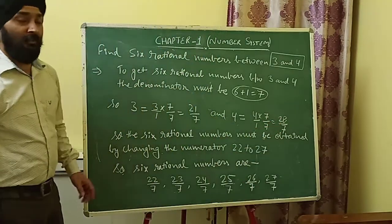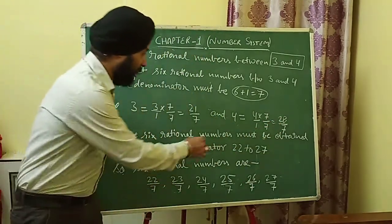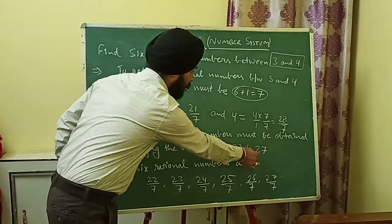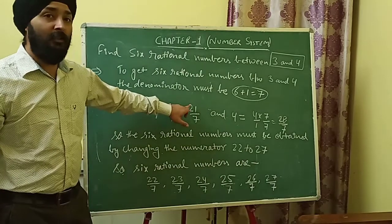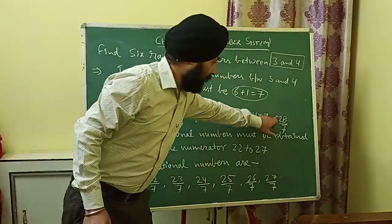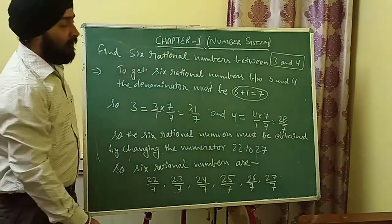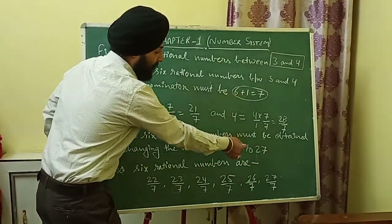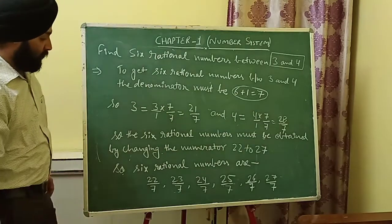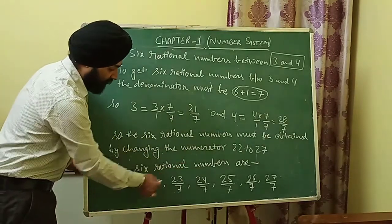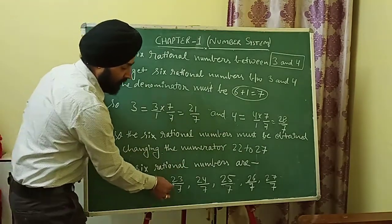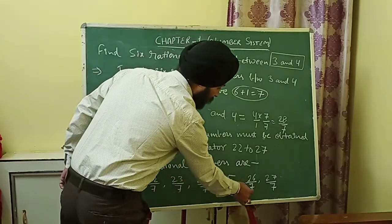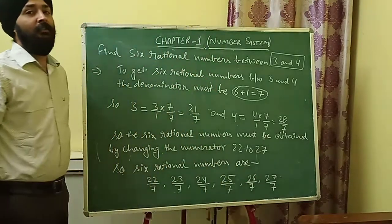Now, we have 21/7 and 28/7. The six rational numbers are obtained by changing the numerator from 22 to 27. So the six rational numbers are: 22/7, 23/7, 24/7, 25/7, 26/7, and 27/7.